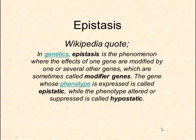Hello, we're talking about epistasis today and this is an A2 topic. We're going to start with a Wikipedia quote: in genetics, epistasis is the phenomenon where the effects of one gene are modified by one or several other genes. In essence, epistasis is when one gene changes the way another gene is expressed. We're going to think of some biochemical ways that could happen and then look at an example in cats.